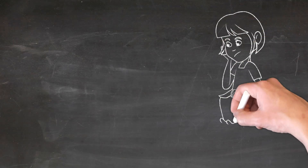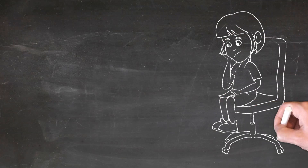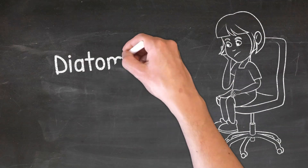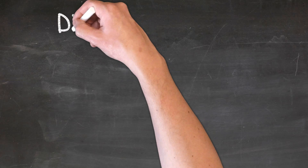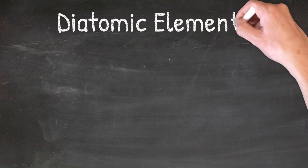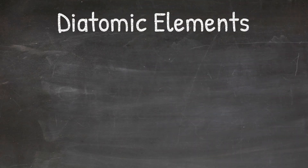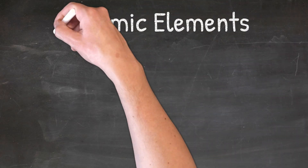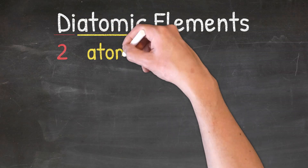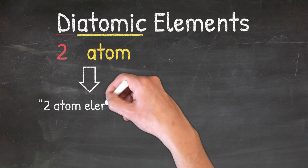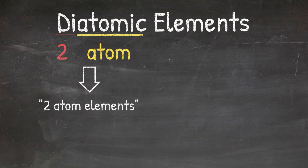What are the diatomic elements and why do they exist? These are two very important questions that all chemistry students need to be able to answer to be successful in chemistry. In chemistry, there are seven elements that are known as diatomic elements. Di means two and atomic means atom, so our diatomic elements are just two-atom elements.